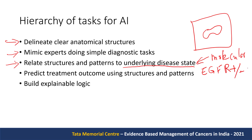That is one way of structuring an AI task. Then, slightly more complex, is predicting the treatment outcome. For example, if you are looking at two tumors that are diagnostically the same, which one is likely to survive and which is not for a given treatment. If we have such models for multiple treatments, we can plan treatments better.